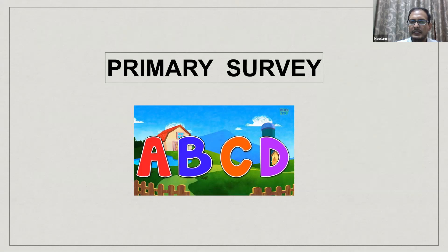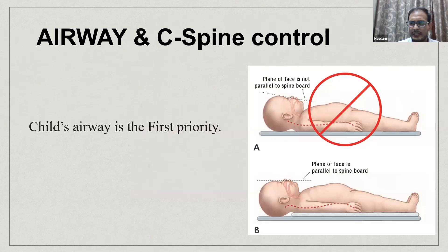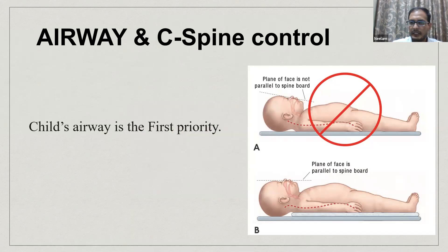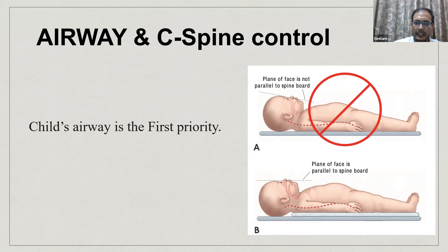Coming to the primary survey — ABCDE, similar to adult but with key differences. The pediatric patient's head is large relative to the body, so when placed on a spine board, the neck is in a flexed position and the airway is somewhat obstructed. We must correct this by placing a one-inch roll below the trunk to elevate it so that the plane of the face is parallel to the spine board. Clearing and aligning the airway is the first priority in the pediatric ABC.